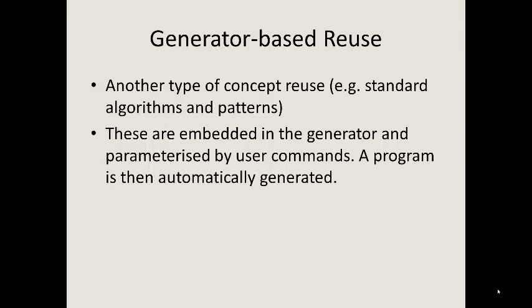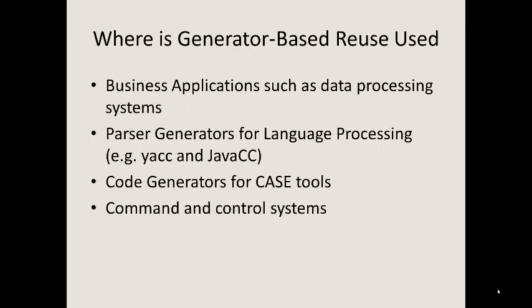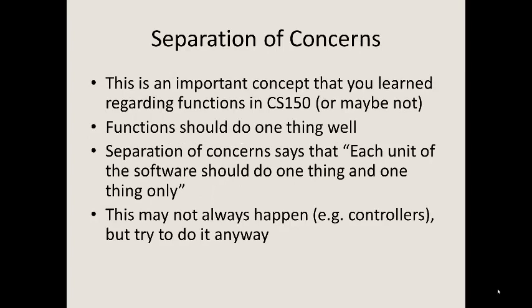Generator-based reuse is another type of concept reuse. Standard algorithms and patterns are embedded in a generator and parameterized by user commands, and the program is then automatically generated. This is used in business applications such as data processing systems, parser generators for language processing like YACC or JavaCC, code generators for CASE tools, and command and control systems. It also takes advantage of separation of concerns — a function does one thing and does it well; each unit of software should only do one thing and do it well.